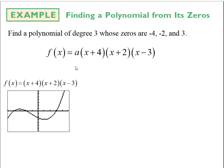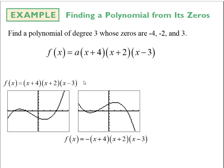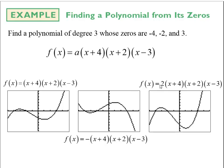Whether a equals 1, negative 1, or 2, the x-intercepts remain at negative 4, negative 2, and 3. The sign of the leading coefficient does change the end behavior — a negative coefficient flips the graph — but it doesn't change the actual x-intercepts. So the zeros are determined entirely by the factors.